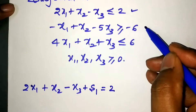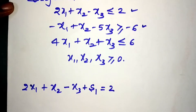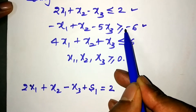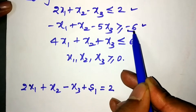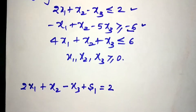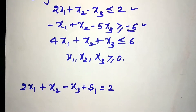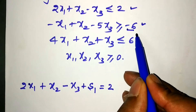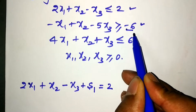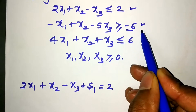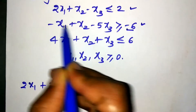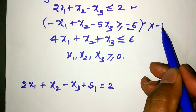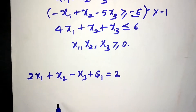Now I'll take the second constraint. In the second constraint, after the inequality sign, we have a minus sign on the RHS. Standard form requires no negative value on the RHS. So in order to make it positive, I'll multiply this second constraint by minus one.